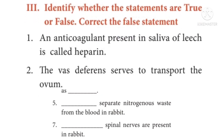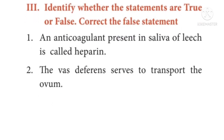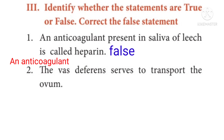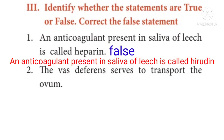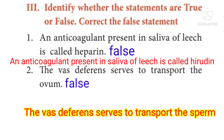Part 3: Identify whether the statements are true or false. Correct the false statements. Question 1: An anticoagulant present in the saliva of leech is called Heparin — False. The correct statement is: the anticoagulant present in the saliva of leech is called Hirudin. Question 2: The vas deferens serves to transport the ovum — False. The correct statement is: the vas deferens serves to transport the sperm.